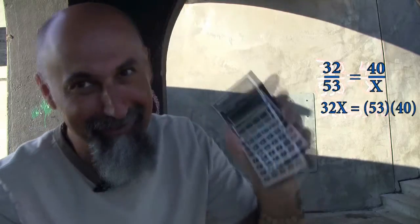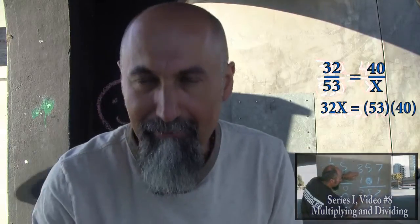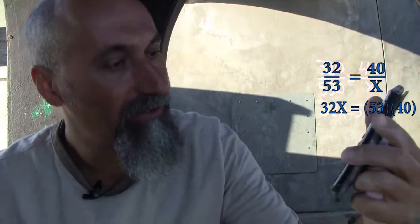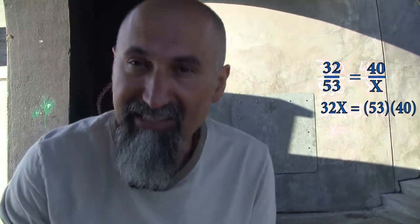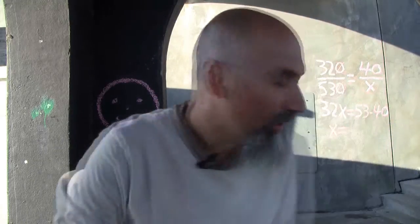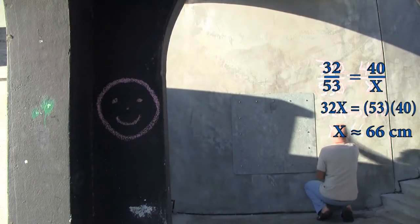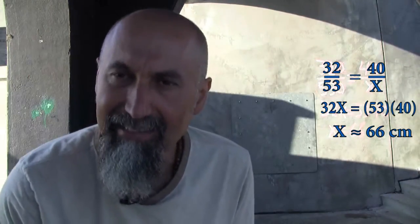53 times 40 — you can do this by hand, but I'm using a calculator because of limited space. You should still know how to multiply, divide, add, and subtract — that's covered in series one, basic mathematics. So 53 times 40 gives us 2,120. Then 2,120 divided by 32 gives us 66.25 — that's the diameter of the circle we need to draw on the back wall. We round it down to 66 centimeters.